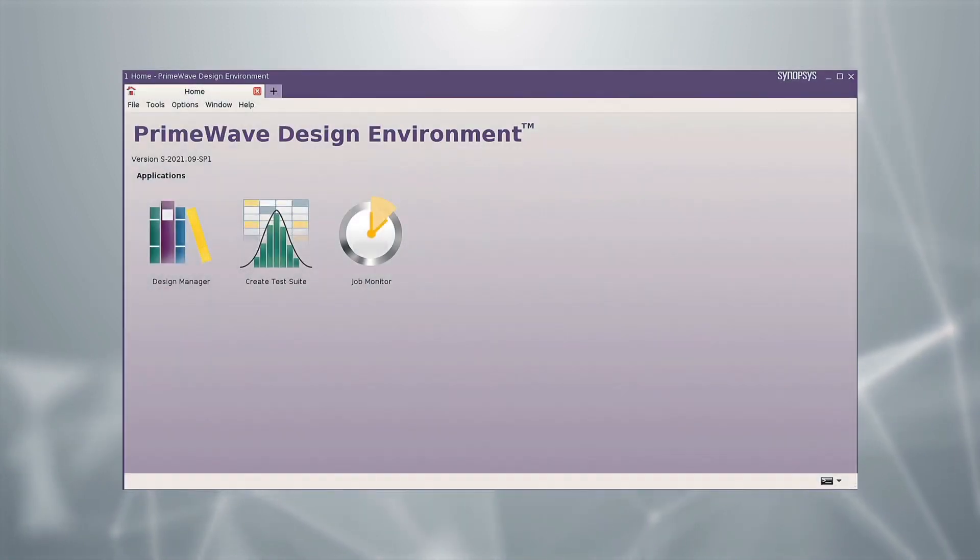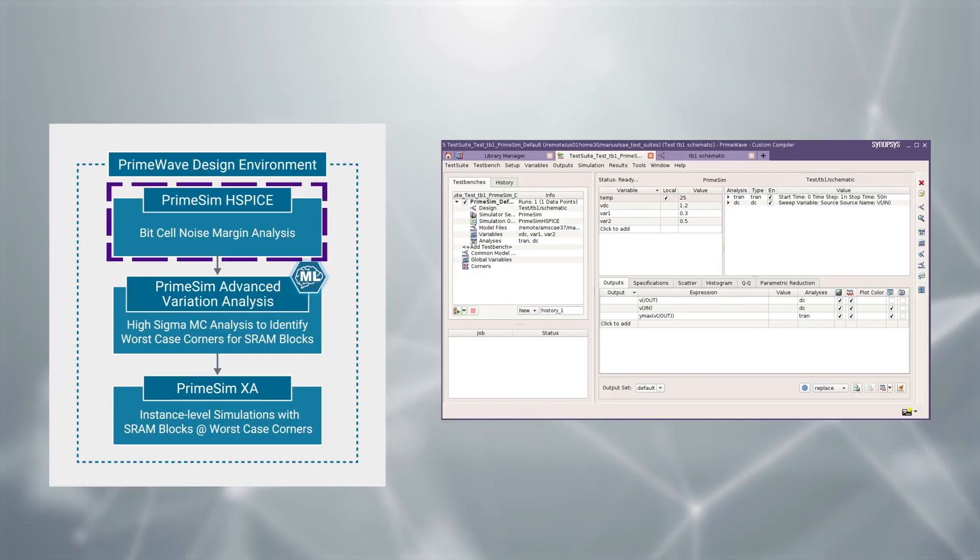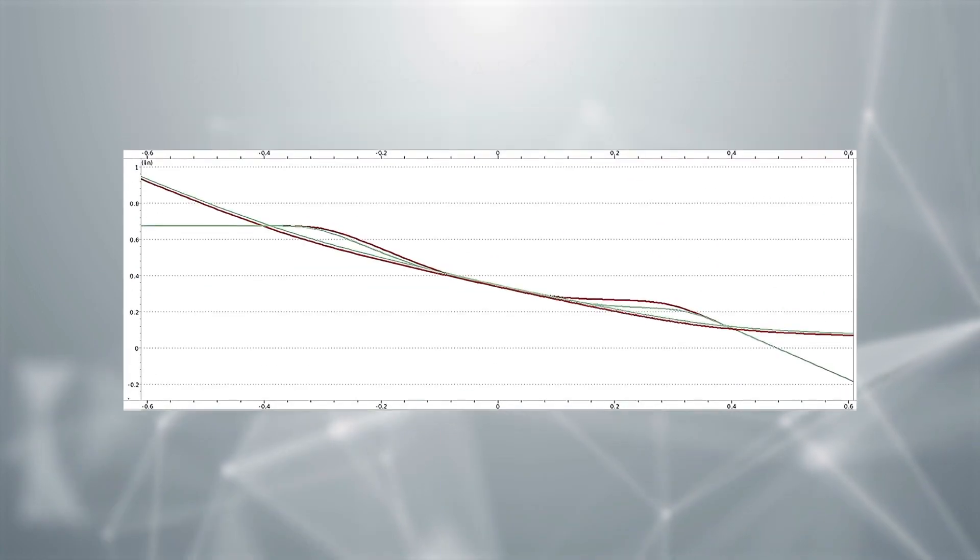Users can launch the workflow from within PrimeWave design environment. In the first step, PrimeSim HSPICE is used to characterize SRAM bit cell noise margins. The designer uses that information to optimize read-write circuitry.